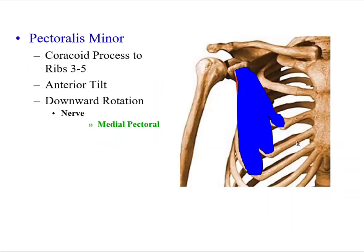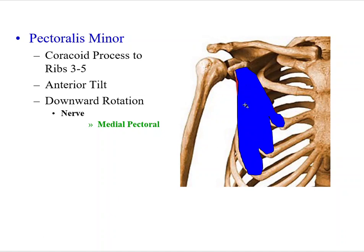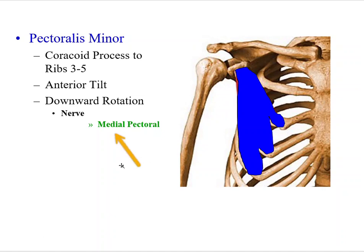Moving over to the anterior side, we can see our clavicle and our acromion process. Coming off the coracoid process to ribs 3, 4, and 5 is our pectoralis minor muscle. It creates anterior tilt, and more importantly, it creates depression of the scapula or downward rotation. The neural innervation is the medial pectoral nerve.